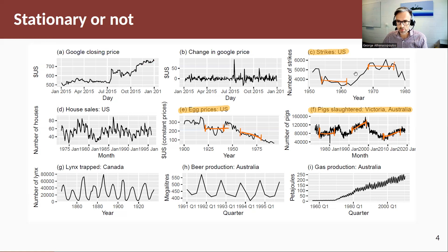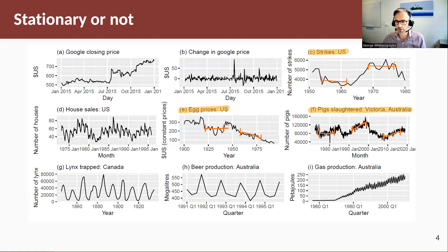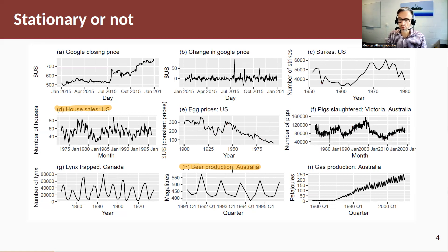Now let's consider time series with changes in level or trending behavior. Strikes in the US: the first half looks very different from the second half. Annual egg prices in the US show trending behavior in the second half. Pigs slaughtered in Victoria, monthly data, again shows changing trending behavior — hence non-stationary. There are also two series with seasonal patterns: US house sales (monthly) and beer production (quarterly). Long-term seasonal patterns are predictable, so this data is non-stationary.